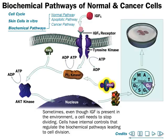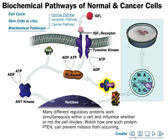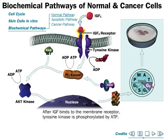Sometimes, even though IGF is present in the environment, a cell needs to stop dividing. Cells have internal controls that regulate the biochemical pathways leading to cell division. Many different regulatory proteins work simultaneously within a cell, influencing whether or not the cell divides. One such protein, PTEN (p10), can prevent mitosis from occurring.